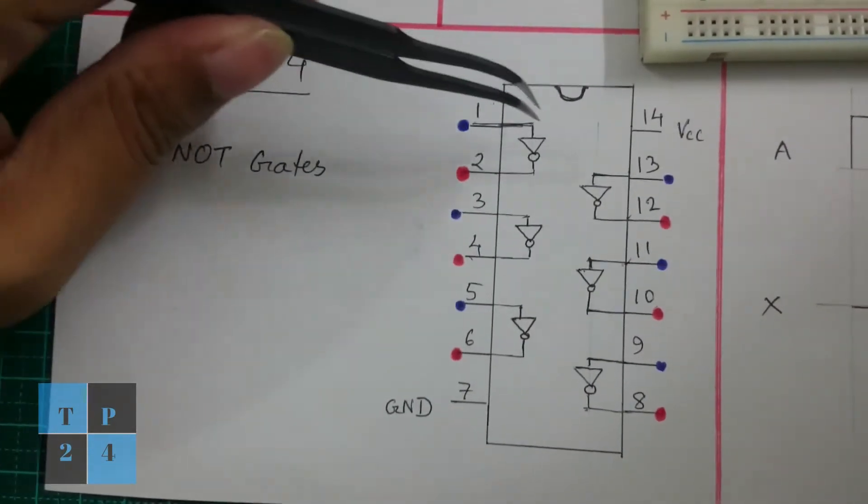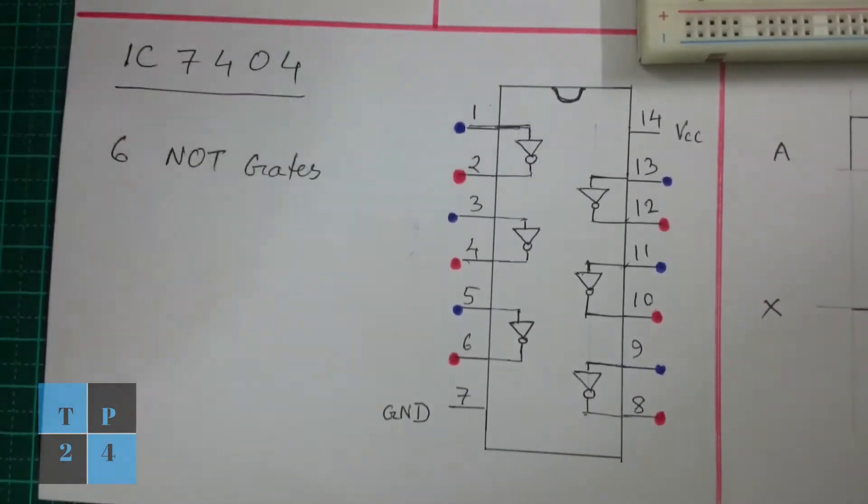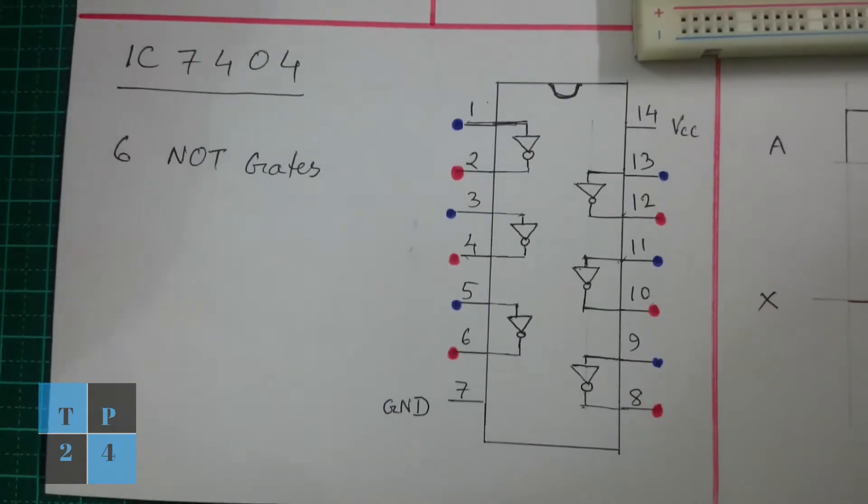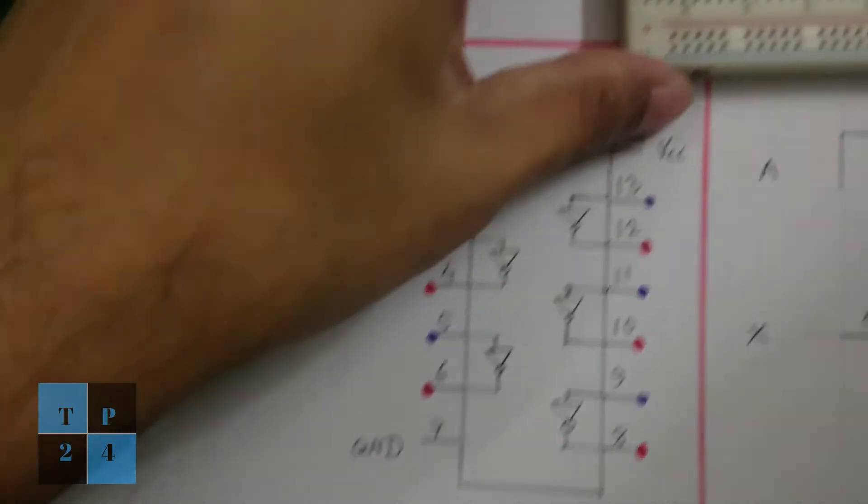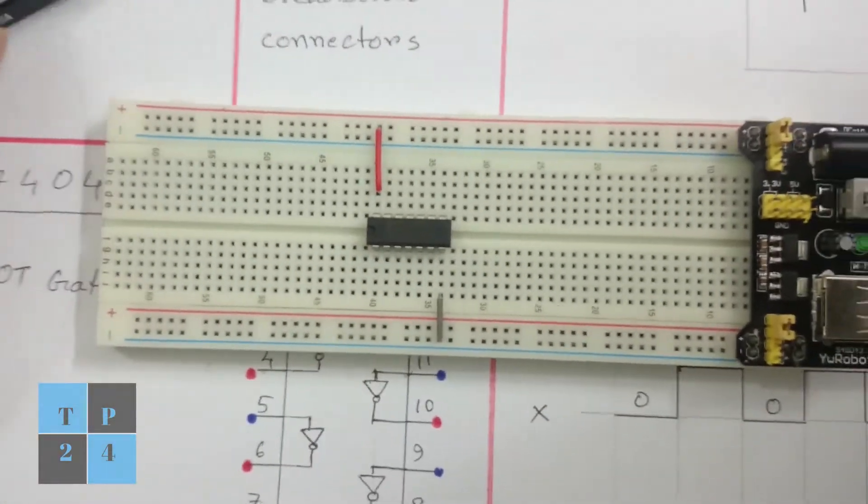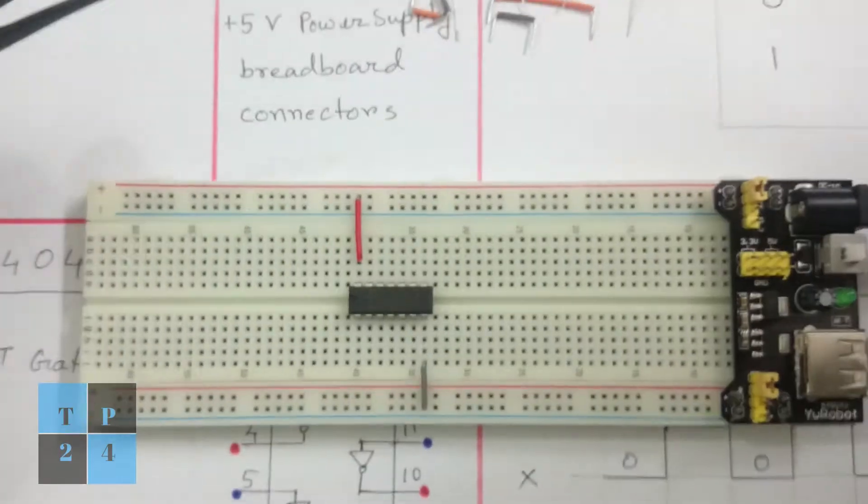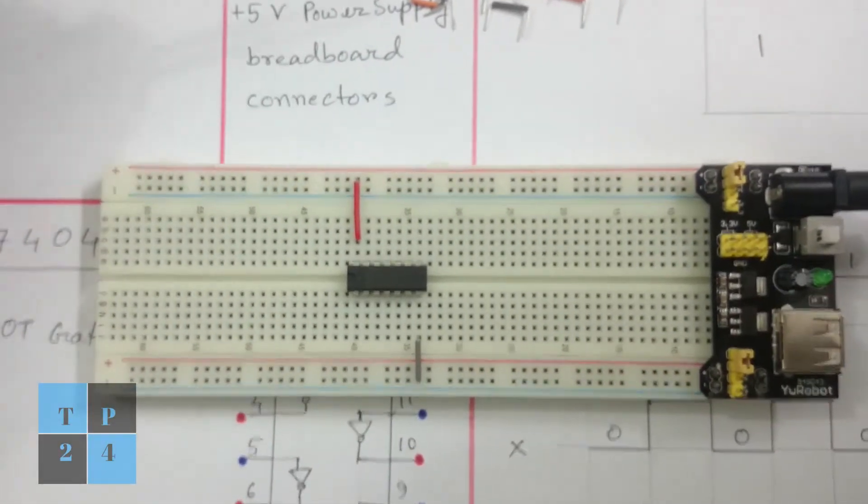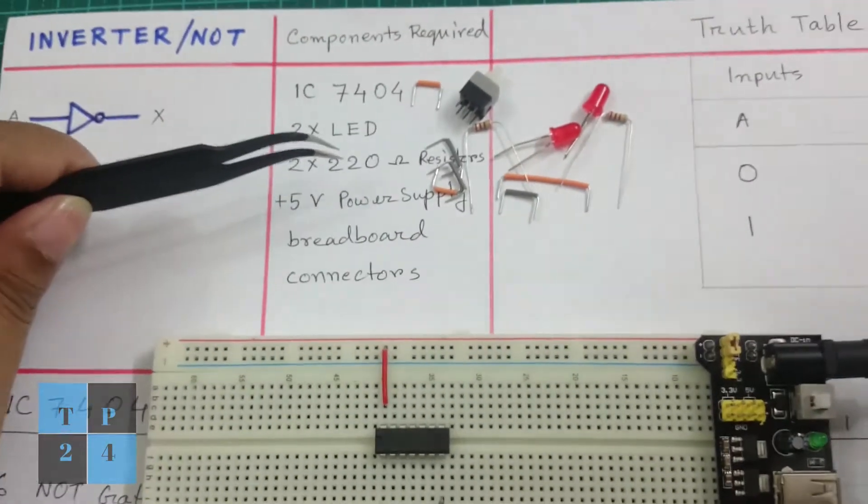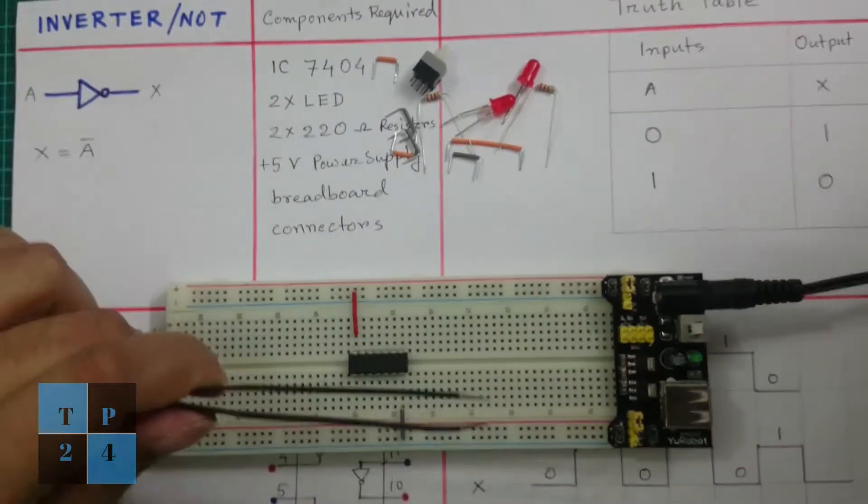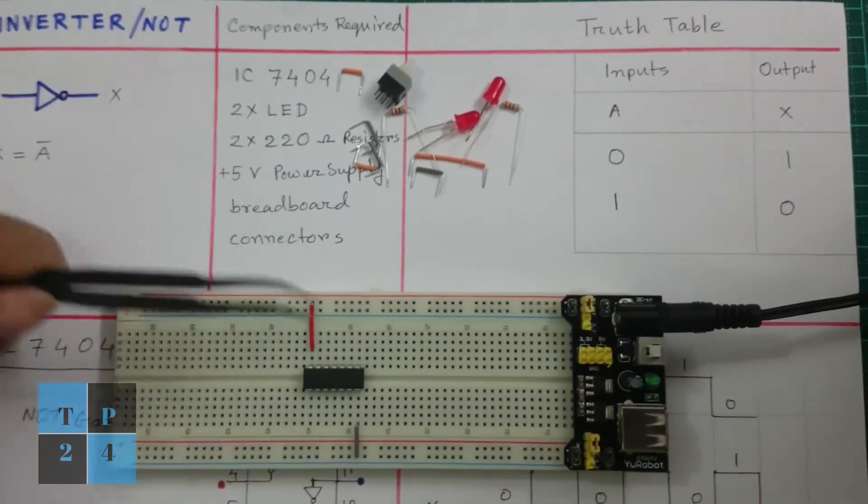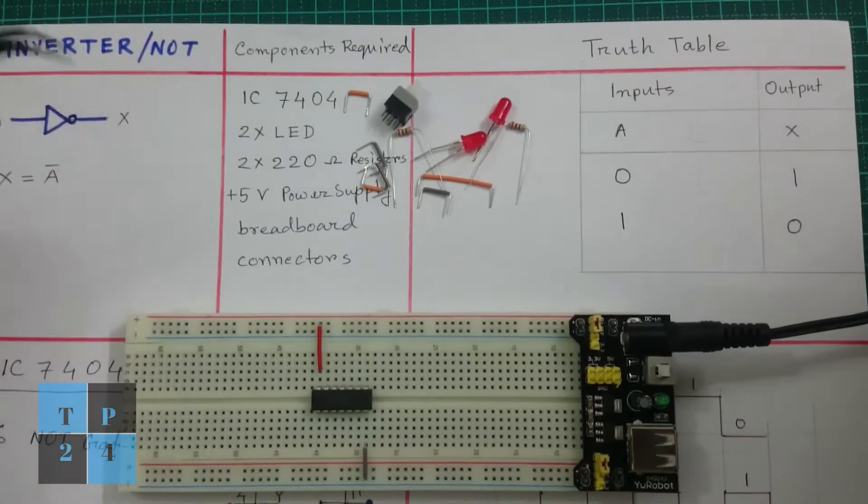I am going to use this inverter to explain the inverter phenomenon. Here is my IC7404 and I need some other components like two LEDs, two 220 ohm resistors, 5 volt DC power supply, and one breadboard and a few connectors and a switch.